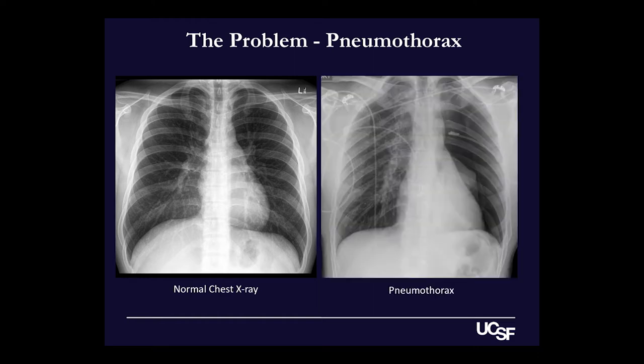Contrast this with the picture on the right. This is an example of a very large pneumothorax. The right lung looks pretty normal, but the left chest just looks too empty. It turns out that's because the reason you're not seeing this fine branching pattern is that the left lung is completely deflated and collapsed. That little lump outlined by the arrows is the left lung.